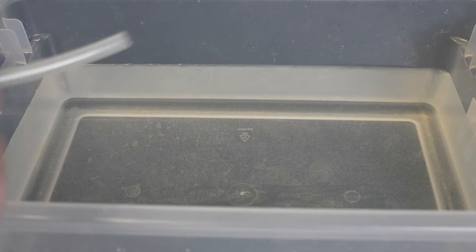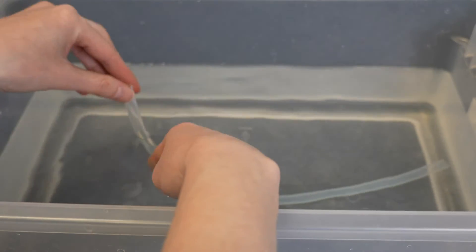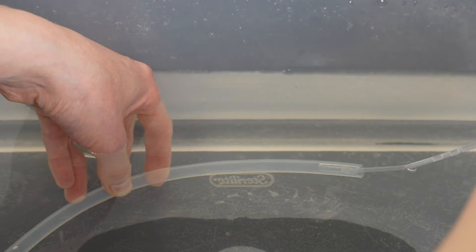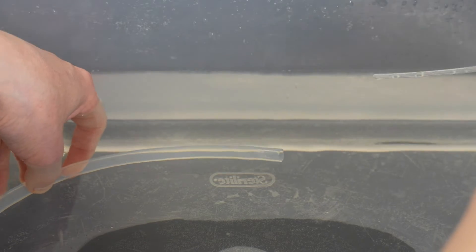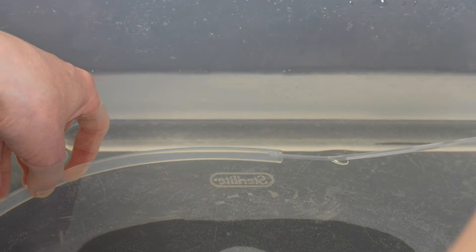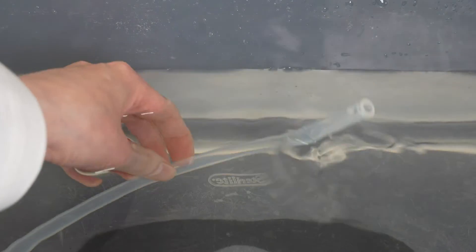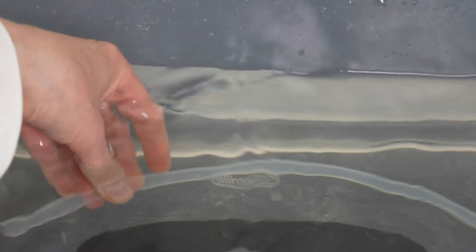First we need to build our potometer which will allow us to measure transpiration in a leaf. The goal is to create an airtight system with no air bubbles because air bubbles can disrupt the movement of water through the plant. I'll submerge my plastic tubing and pipette in the basin so they completely fill up with water. You can also use this pipette to pull water all the way through the tubing without submerging it, whatever you prefer. If I see bubbles I'll get rid of them by using a syringe to pull the water all the way through the tube or squeeze it a little bit until the bubble pops out.